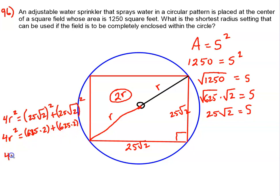So that's going to be 1250 plus 1250, so that's 2500, and we're going to divide by 4. 2500 divided by 4 is 625, and we'll do the square root of both sides to get r.